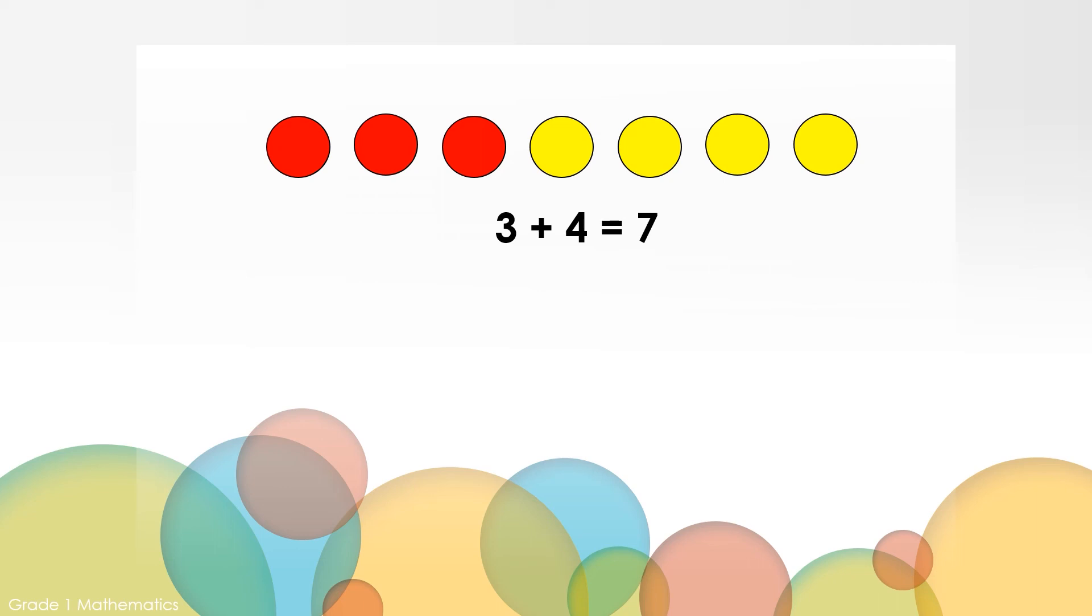Consider this: if we know that three red counters plus four red counters makes a total of seven counters, how can we use this information to help us solve seven minus three equals what number? Seven minus three is the same as four. That's right. We can see that these are related facts. Seven minus three is the same as four.